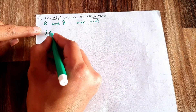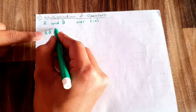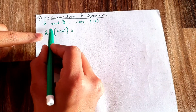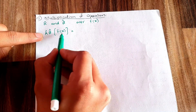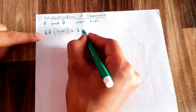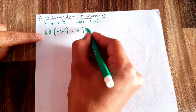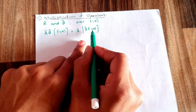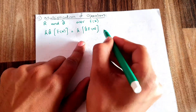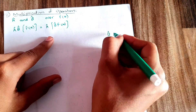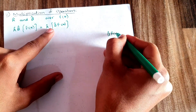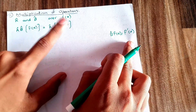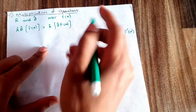When operators A and B are multiplied and applied to f(x), first of all operator B will be applied on f(x). The result is written as A·B·f(x). For example, if applying B on f(x) gives f'(x), then we can write f'(x) in place of B·f(x).